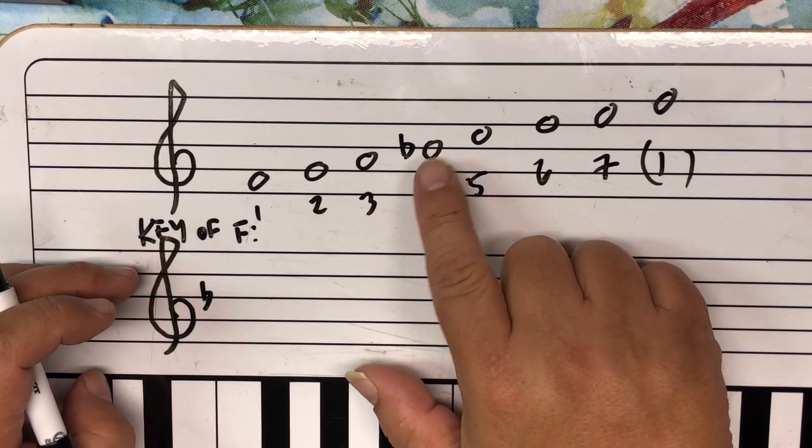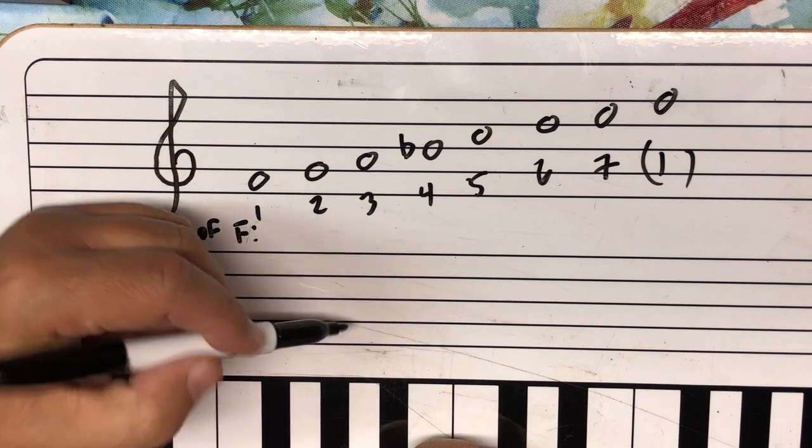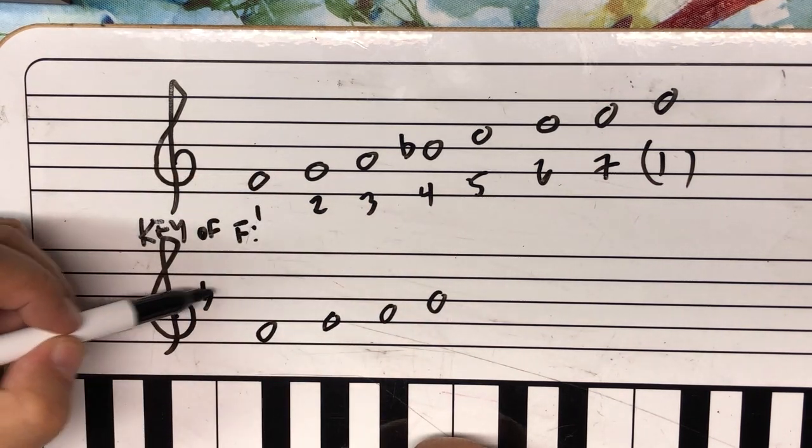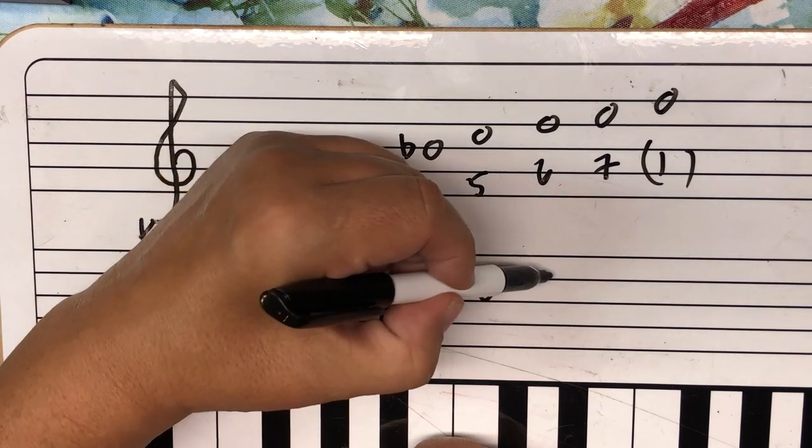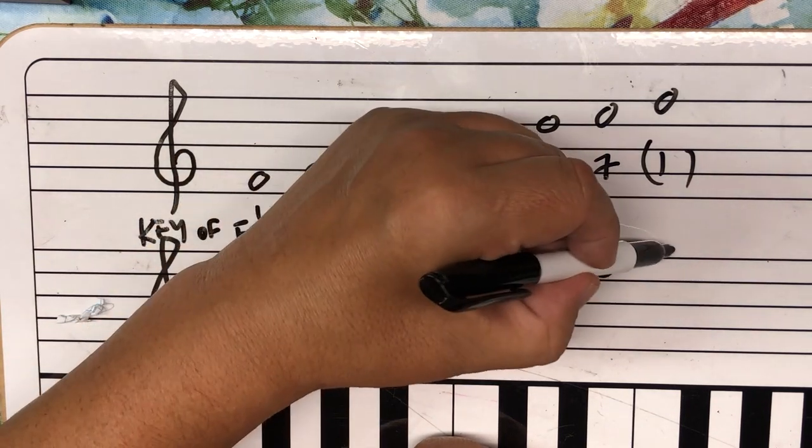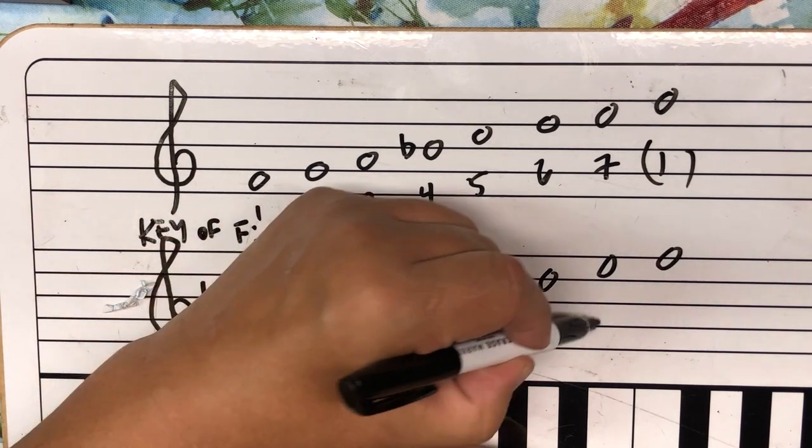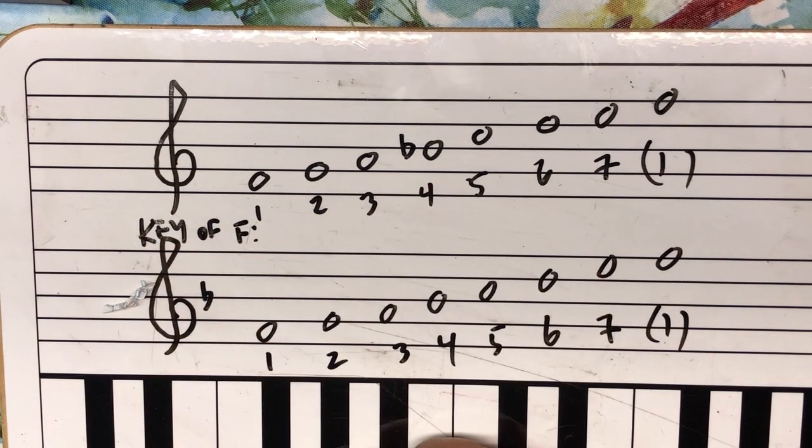And that would say, aha, we're in the key of F, we're using the F scale. And then I don't have to write this in all the time. I could just write F, G, A, B, and because this is there, flat, C, D, E, F. Again, one, two, three, four, five, six, seven, and one.